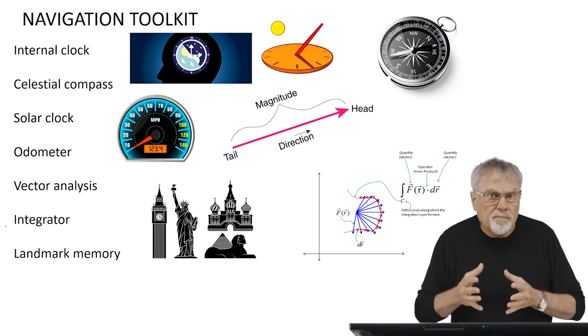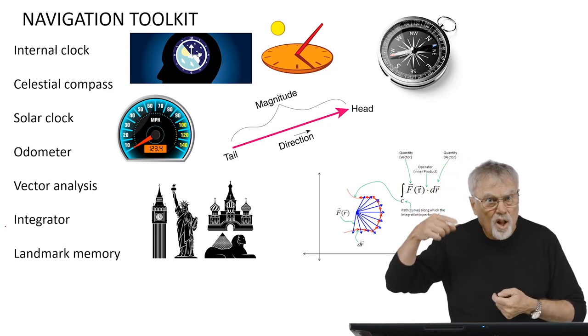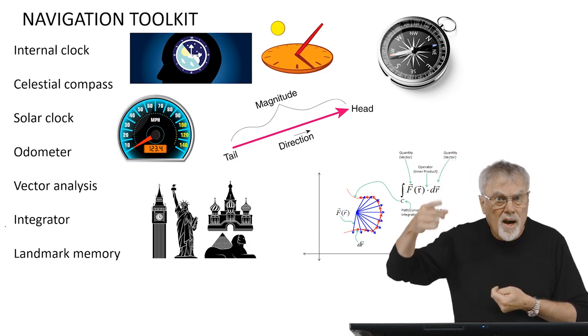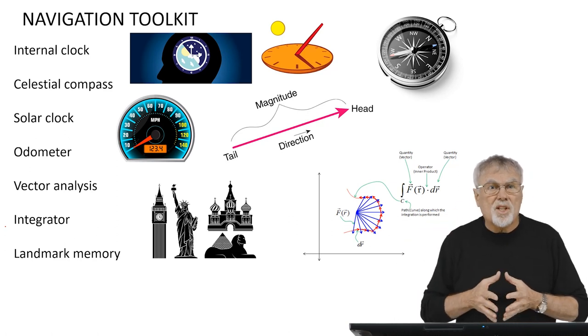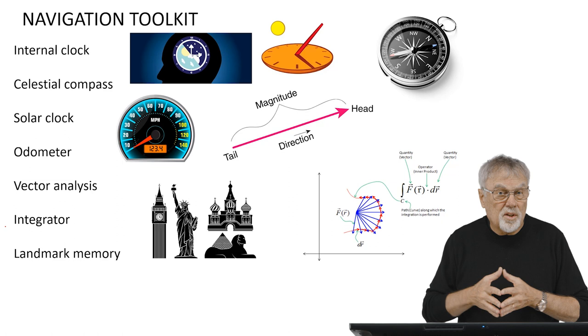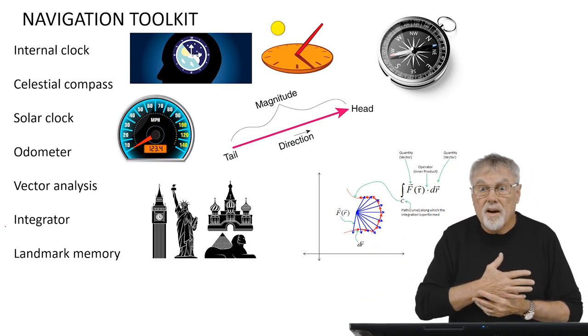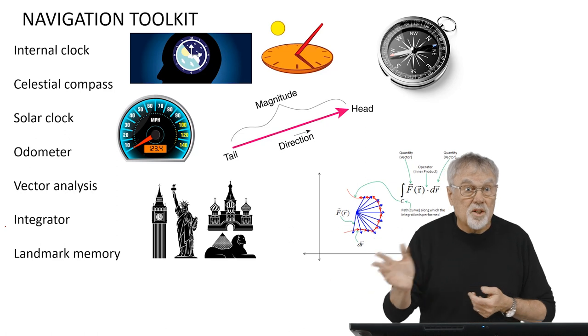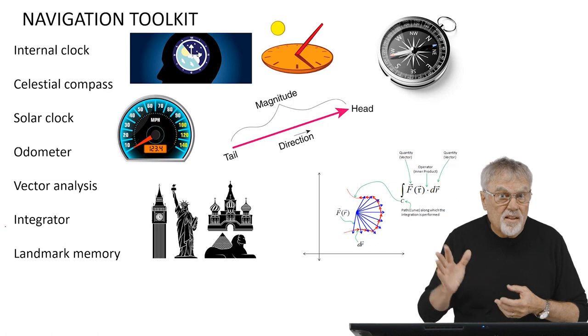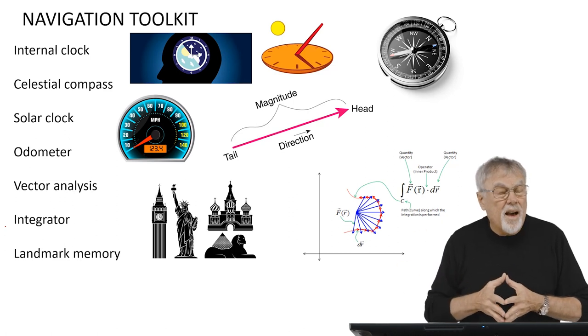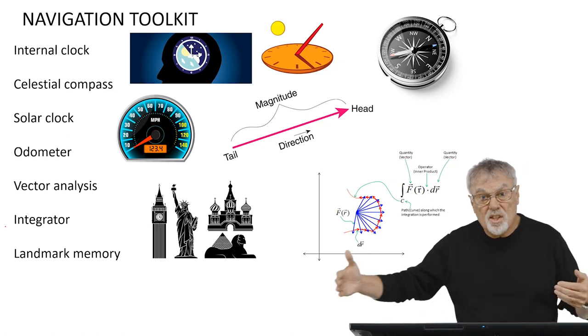First of all, they have an internal clock. They have a clock that's going off in their bodies, a biochemical clock that keeps time for them. They have a celestial compass, where they actually internally have a compass where they can orient direction. They have a solar clock. They can keep time relative to the sun, and they learn that.